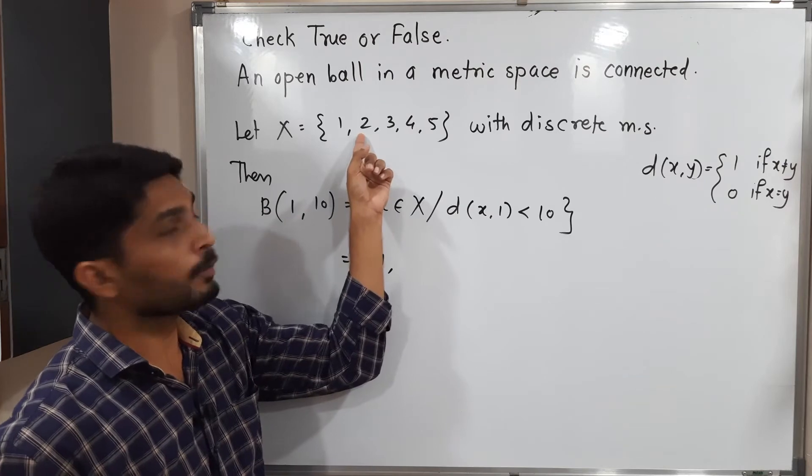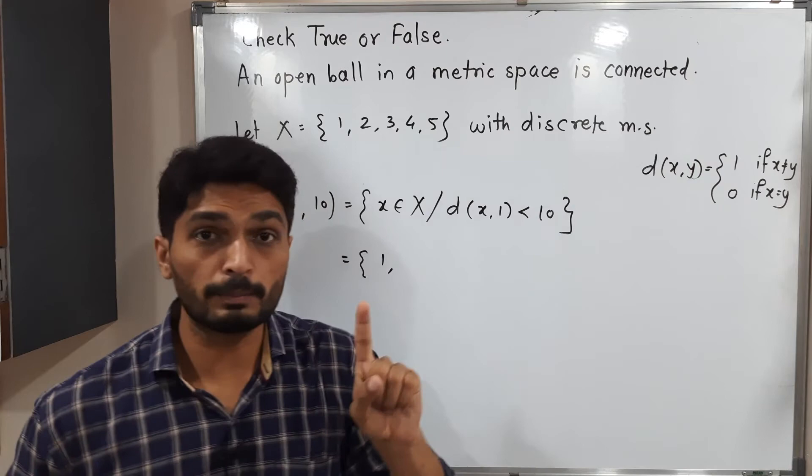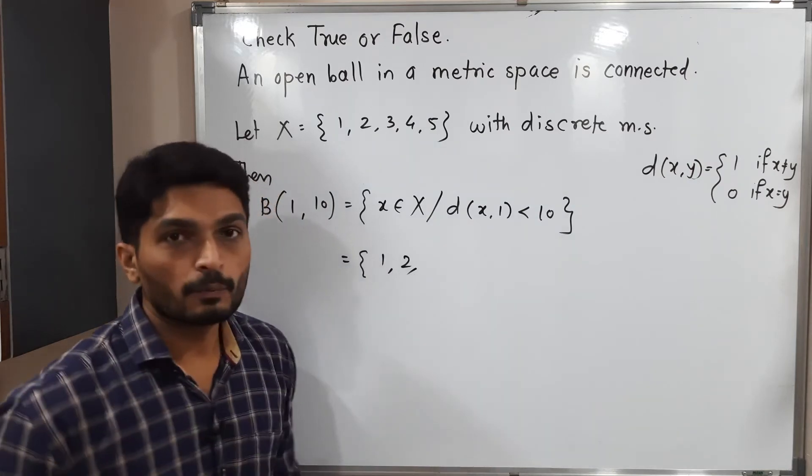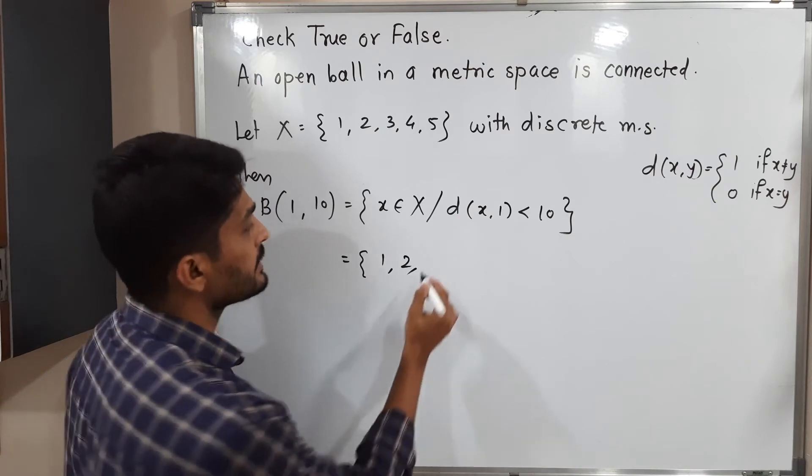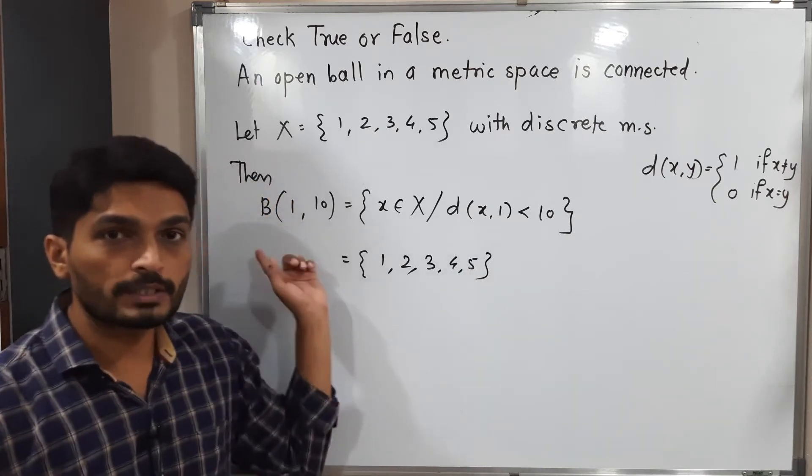If you are talking about point 2, distance of 1 and 2. As you know if points are distinct, distance will be 1 which is obviously less than 10. So 2 is a member of this set. By applying the same logic we can say 3, 4, 5. All these are elements of this set. So what is this open ball? This one open ball we have got.